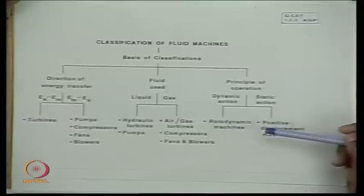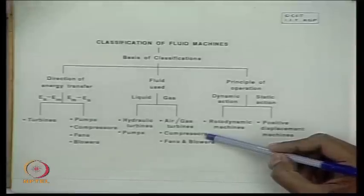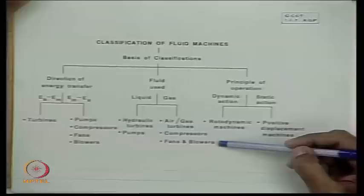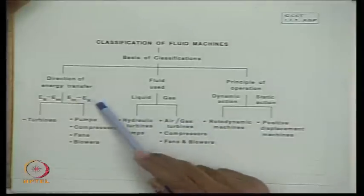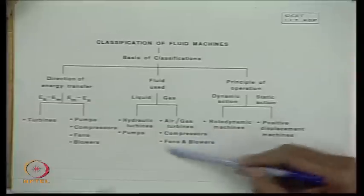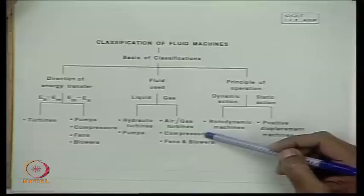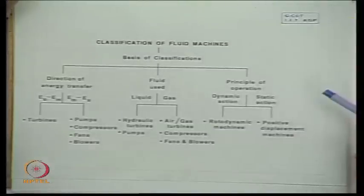The stored energy generated from mechanical energy is either pressure energy or kinetic energy. When the stored energy is in the form of pressure energy — that is, the pressure of the fluid is raised — the machines are termed compressors. A compressor always provides high-pressure air with relatively low flow velocity. In fans and blowers, mechanical energy is converted to kinetic energy of the fluid, so fans and blowers provide mostly kinetic energy, whereas compressors provide pressure energy.